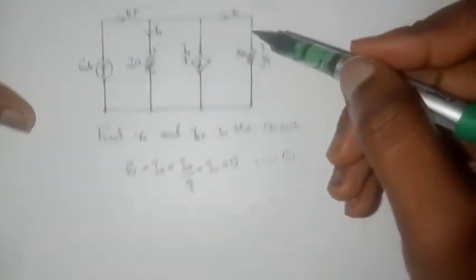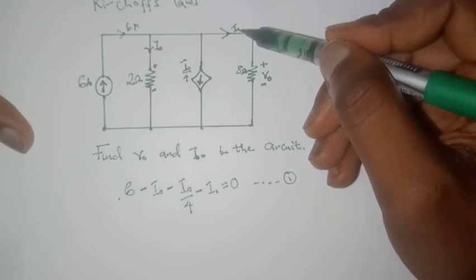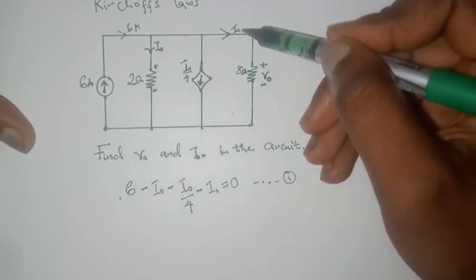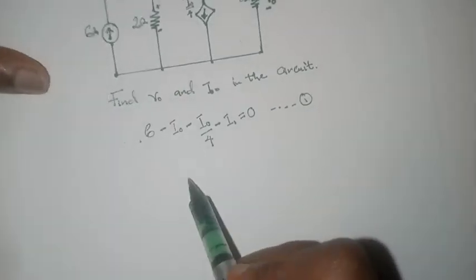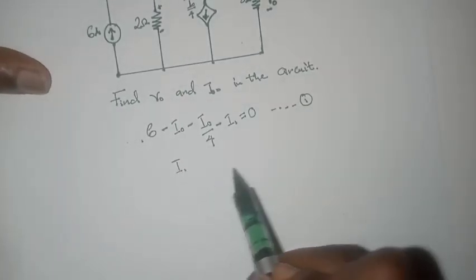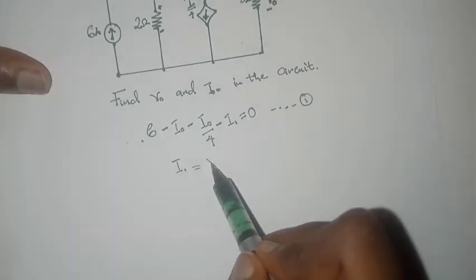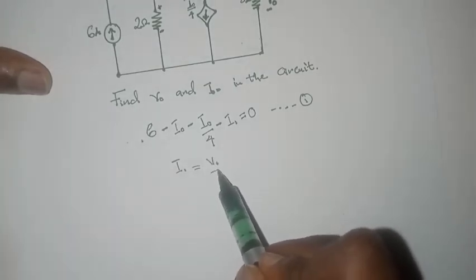Considering this branch, we can determine the value of I1 using Ohm's law. We can say that I1 is equal to V0 divided by 8.